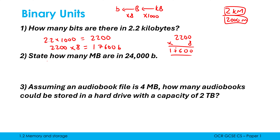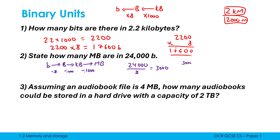Next: how many megabytes are in 24,000 bits? To go from bits to megabytes, you pass through bytes then kilobytes. This time we're going from a small unit to a big unit, so we divide. From bits to bytes, divide by eight. From bytes to kilobytes, divide by a thousand. From kilobytes to megabytes, divide by a thousand again. So: 24,000 ÷ 8 = 3,000; 3,000 ÷ 1,000 = 3; 3 ÷ 1,000 = 0.003. The answer is 0.003 megabytes.